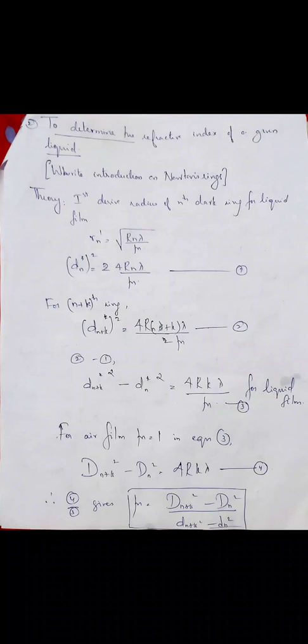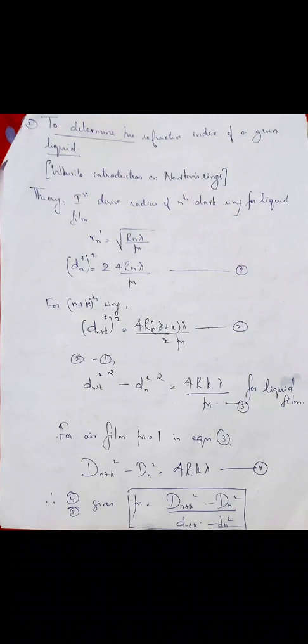In the introduction, the Newton's rings setup consists of a plano-convex lens of large radius of curvature placed on an optically plain glass plate, so that you get an air film between the lens and the glass plate having varying thickness. The thickness of the air film is zero at the point of contact and increases towards the edge of the lens. When monochromatic light is incident normally, part of it reflects from the top of the air film and part from the bottom, and these two reflected rays superimpose to produce an interference pattern of alternate dark and bright rings, since along a ring the thickness is constant.